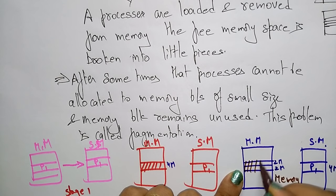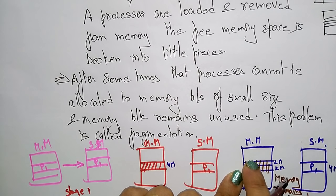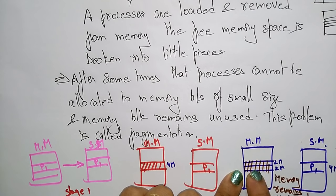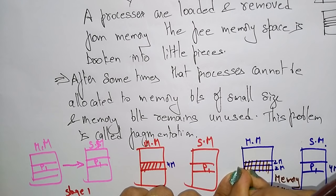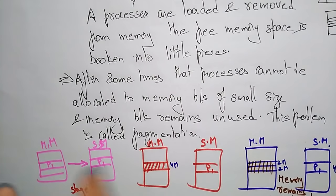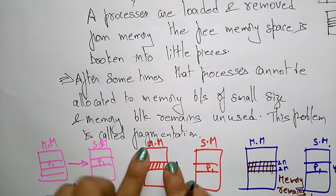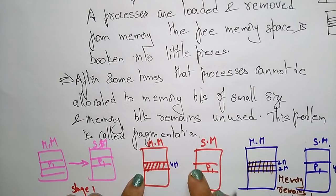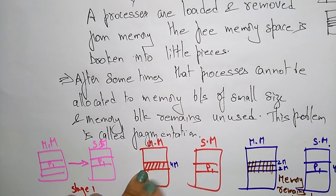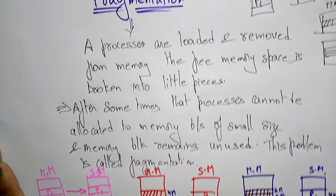Since it is partitioned, this process cannot come back to main memory and the memory remains unused. Because this is 2 MB and 2 MB, the process cannot come back to main memory since it is already divided into smaller pieces and cannot fit in the memory block. These memory blocks remain unused. This problem you call fragmentation — the process cannot fit into that memory block. First it sends the process to swap to secondary memory, makes the memory free, and then it is divided into small pieces. When the process wants to come back, the memory block is small in size and remains unused.